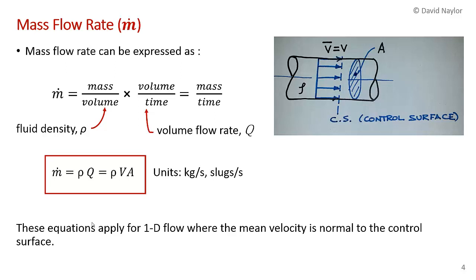Now that we have volume flow rate, we can very easily calculate the mass flow rate. The mass flow rate can be expressed as m-dot equals mass per unit volume times volume per unit time. You'll see that in this expression the volumes cancel, and we just end up with the mass flow rate per unit time. The term mass per unit volume is the fluid density, rho, and volume per unit time is the volume flow rate Q. So m-dot is just rho times Q, where Q equals V times A. This is for one-dimensional flows, and the mass flow rate has units of kilograms per second or slugs per second in the British system.